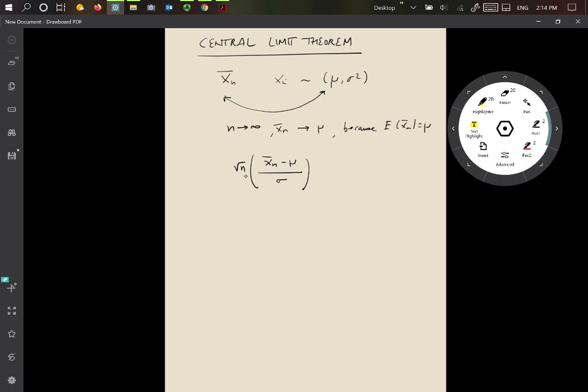And then by dividing by σ by square root n, we are getting something which is going to have hopefully unit variance. And this says that this is going to be distributed normally as 0, 1 for n tends to infinity.